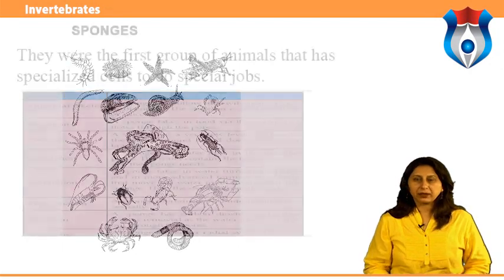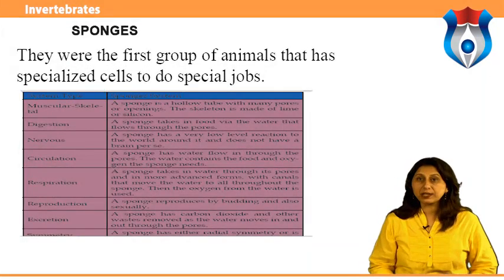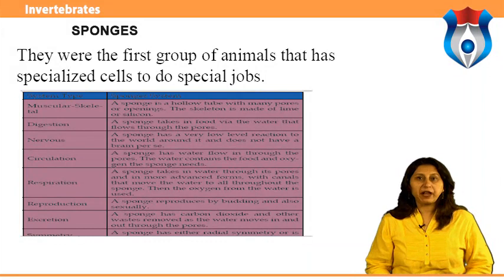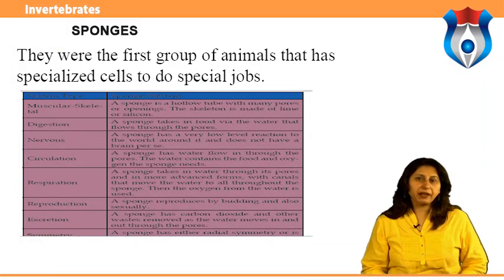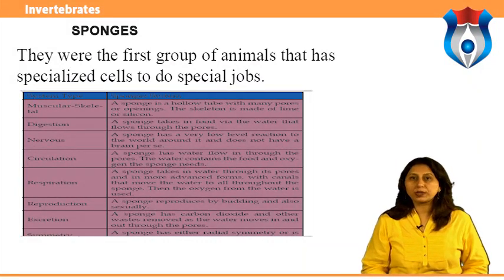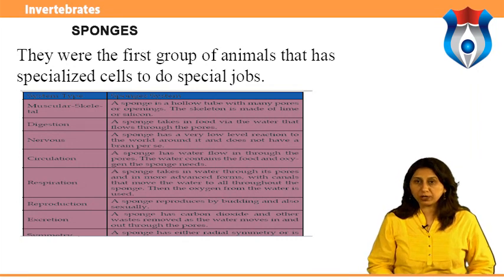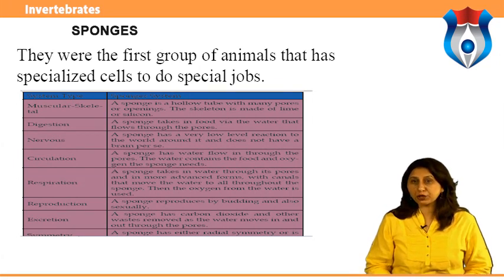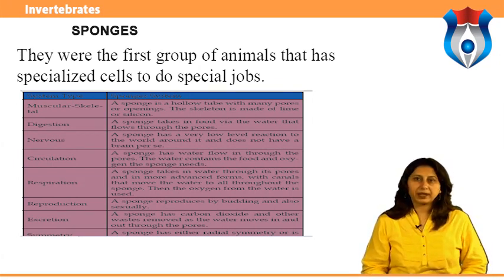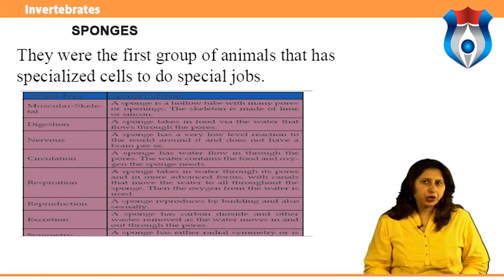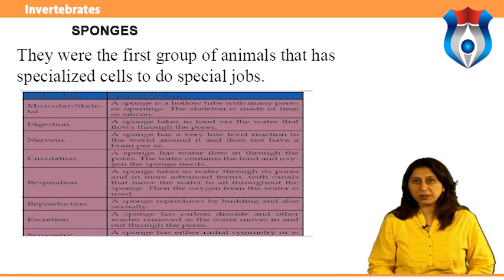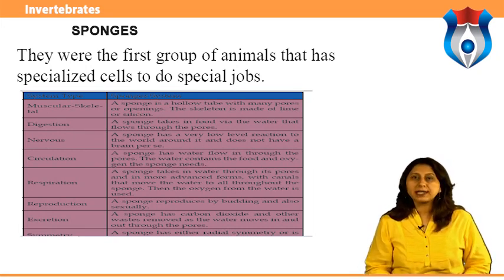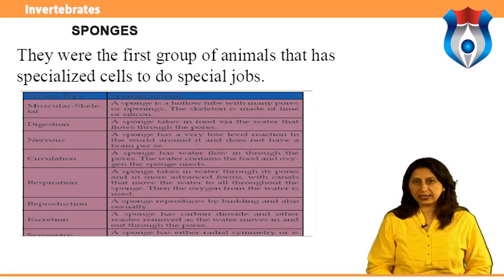Vertebrates and invertebrates are divided into various phyla. There are about five thousand species of sponges found throughout the world; most sponges are found in oceans, although some groups are found in freshwaters such as lakes. They were the first group of animals to have specialized cells to do special jobs, however the cells are not so advanced as to form tissues. Sponges live singly or in colonies.